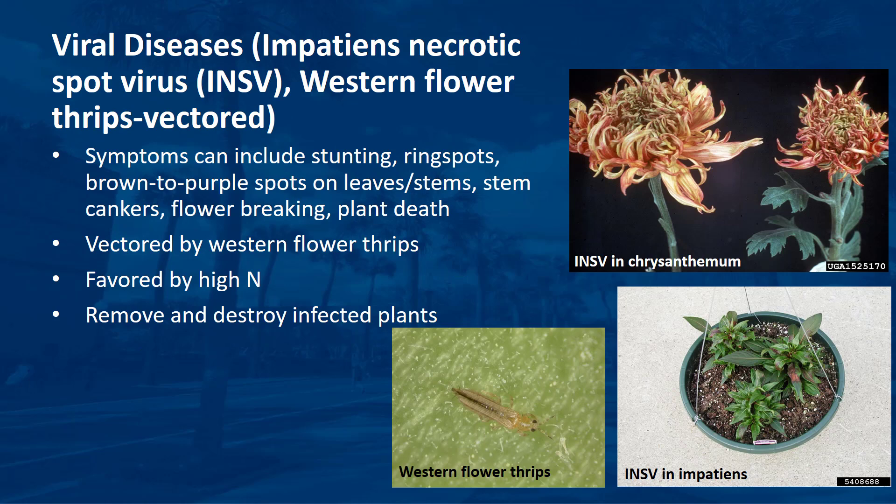Hundreds of plant species are susceptible to INSV. Symptoms may include stunting, ring spots, brown to purple spots on leaves or stems, stem browning, cankers, flower breaking, and plant death. Symptoms of INSV can easily be confused with symptoms caused by other viruses, fungi, bacteria, or nutritional disorders. Western flower thrips vector this disease by its feeding activity. High nitrogen fertility that stimulates new tender growth in the presence of weeds and thrips in the landscape favors this disease. For control, remove and destroy infected plants. Control weeds as they serve as alternate hosts for both the pathogen and thrips. There are insecticides registered for the control of thrips.